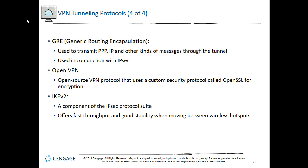GRE, Generic Routing Encapsulation, developed by Cisco, is a layer-3 protocol used to transmit PPP, IP, and other messages through a tunnel, and like L2TP is used in conjunction with IPsec to increase security. OpenVPN is an open-source protocol that uses a custom security protocol called OpenSSL for encryption; it can cross many firewalls where IPsec might be blocked and is both highly secure and highly configurable. IKEv2, a component of the IPsec protocol suite, offers fast throughput and good stability when moving between wireless hotspots, is compatible with a wide variety of devices, and is often recommended by VPN providers as the most secure option.